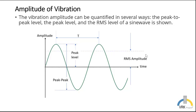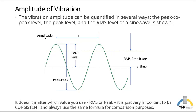As a reference, I'd like to recall that the amplitude of vibration can be quantified in several ways. It can be quantified from peak to peak or at peak level, which is from peak to the equilibrium position, or it could be measured as the RMS amplitude. The peak to peak amplitude is important when we are analyzing a machine for clearance consideration. And the peak level gives us the amplitude respect to the equilibrium position. At the end, it does not matter which value you use, but you can use the RMS amplitude or the peak. It's just very important to be consistent and always use the same formula for comparison purposes.